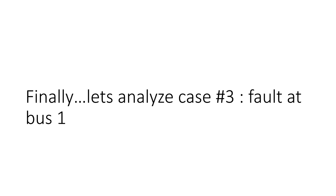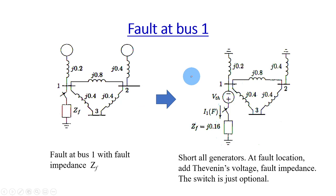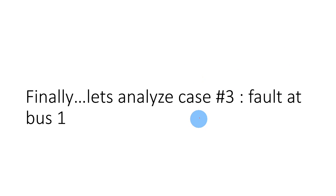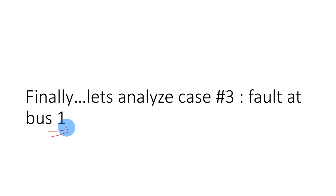Bismillahirrahmanirrahim. Assalamualaikum. Welcome back to the second part of this short lecture video. We're going to share the same example for a balanced 3-phase fault. Now we are going to analyze what will happen to the bus voltage and the fault current, as well as the current flowing through all the lines if the fault occurred at bus number 1. So we have analyzed bus number 3 and bus number 2, and finally we are going to look at what will happen if the fault occurred at bus number 1.